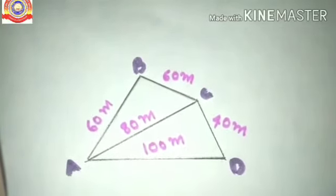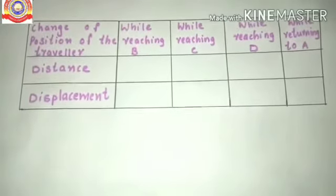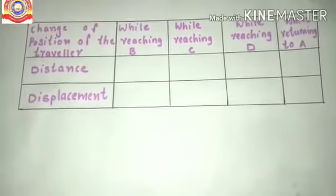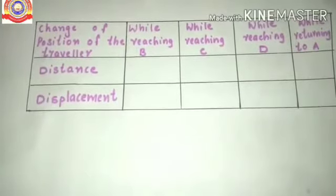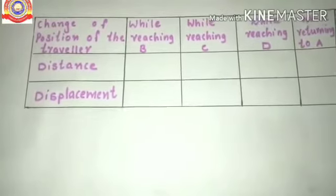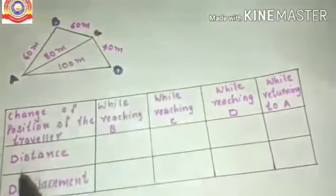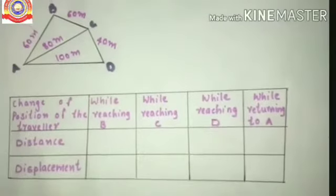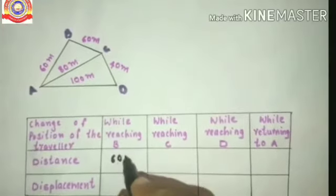Now we are going to find out the distance and displacement from this figure using the table. First, we are going to find out the distance while reaching B. From A to B, the distance travelled by the object is 60 metres, which we can find from the figure. So while reaching B, the distance is 60 metres.